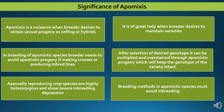As apomixis is a means of asexual reproduction in crop species which are highly heterozygous and so have a higher degree of inbreeding depression, inbreeding should be avoided in apomictic species.